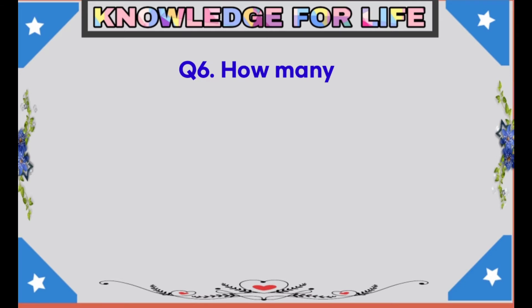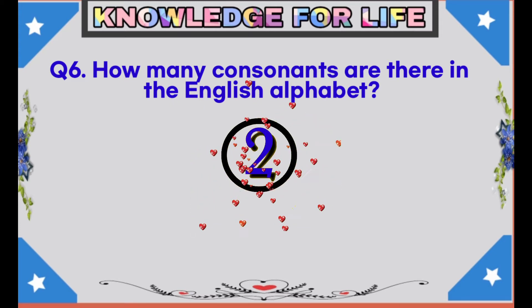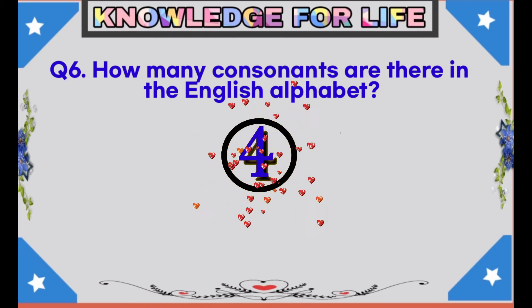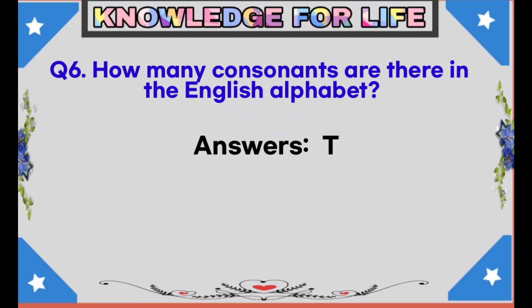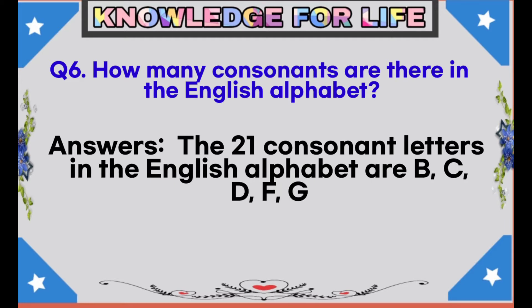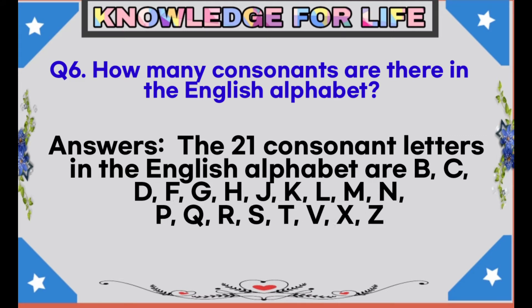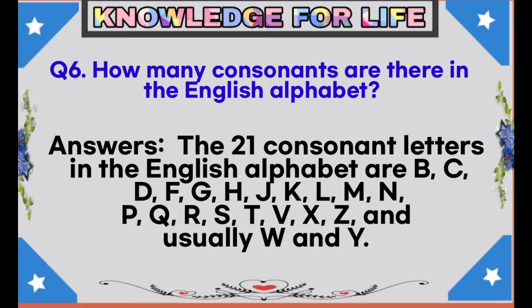Question number 6: How many consonants are there in the English alphabet? Answer: A K L M N V Q R S T V X Z N — unusually W and Y.